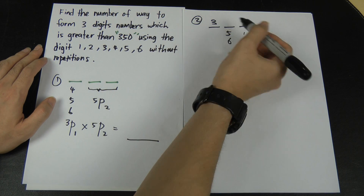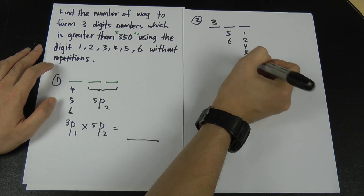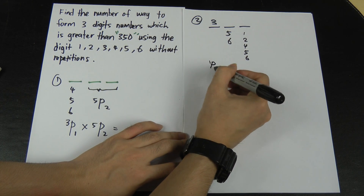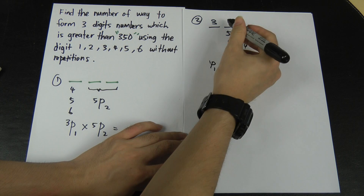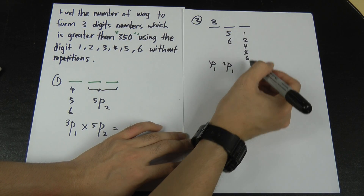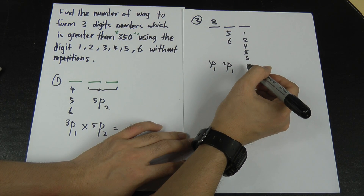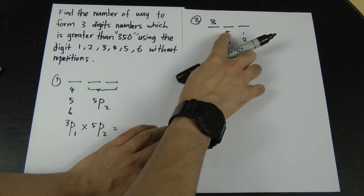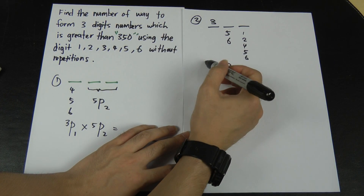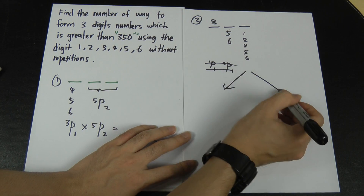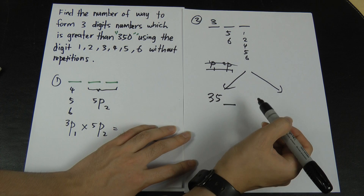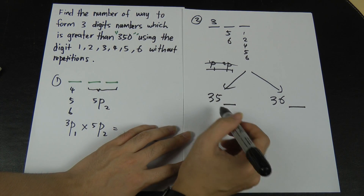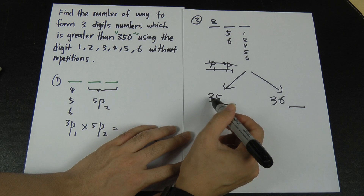For the last place, I can use any remaining number from 1, 2, 4, 5, 6 — not 3, since 3 is already used. To avoid accidentally repeating 5 or 6, I will separate Case 2 into two sub-cases: one where the second digit is 5 (giving 3-5-?), and one where the second digit is 6 (giving 3-6-?). There is 1 way to choose 3, and 1 way to choose 5 or 6 for the respective sub-case.